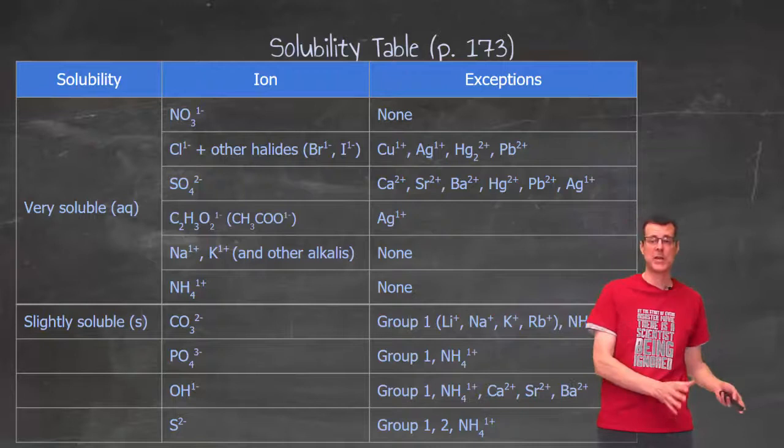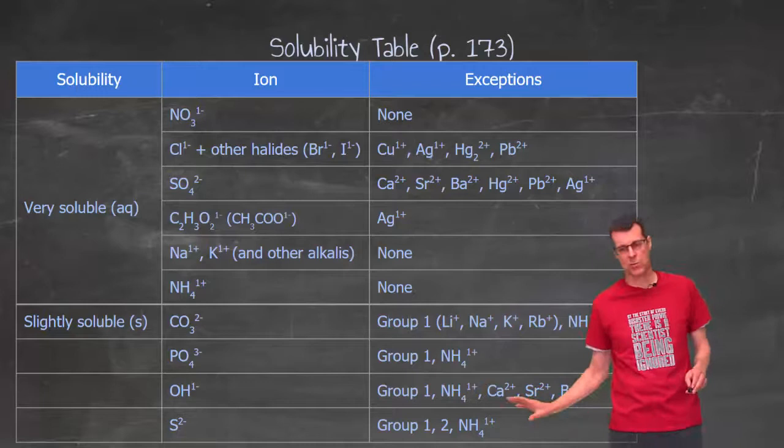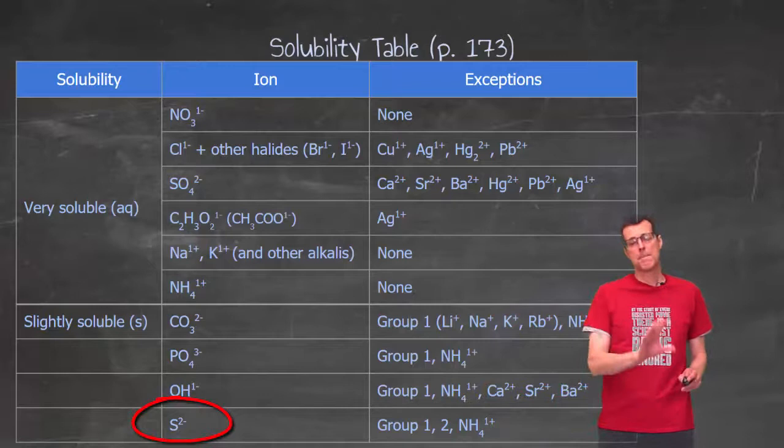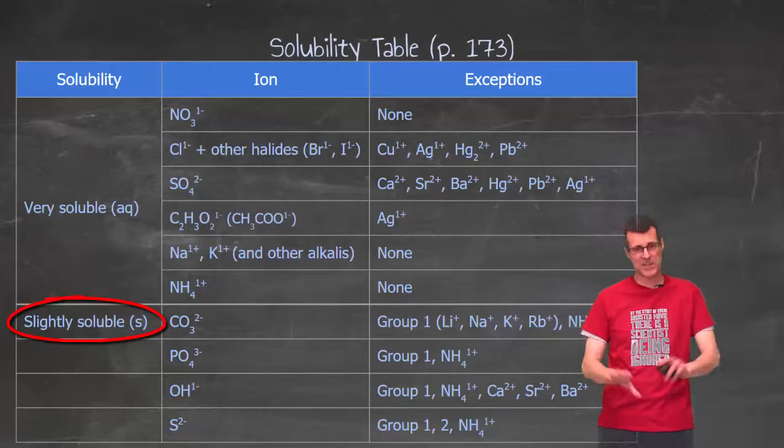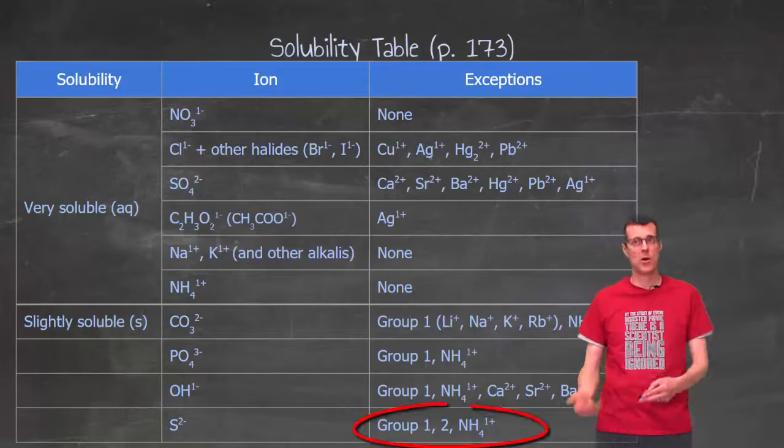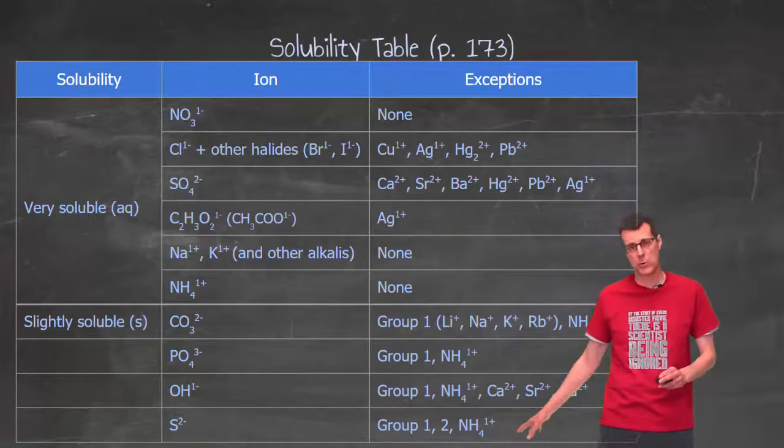If I look at the bottom section, I'm going to go right to the bottom where it says S2 minus. So sulfide. Most sulfide compounds are low solubility or slightly soluble because the whole section there is on slightly soluble. The exceptions, the ones that are not slightly soluble, or in other words, the ones that are soluble are group 1. So that's lithium, sodium, potassium.